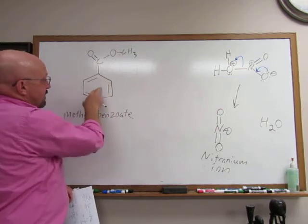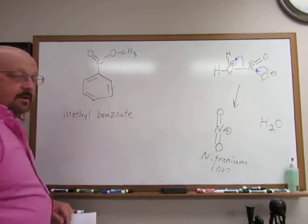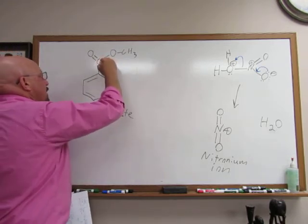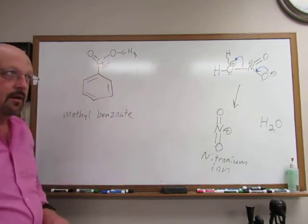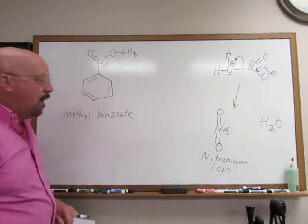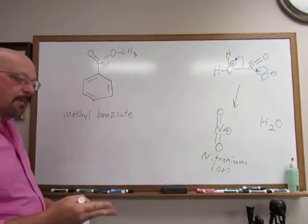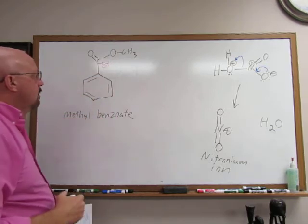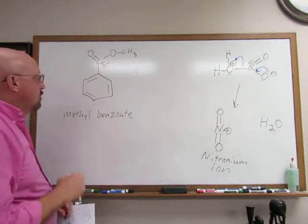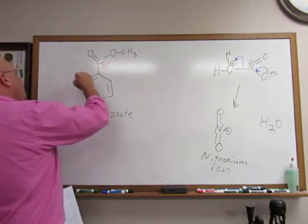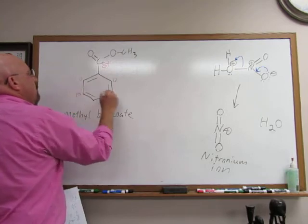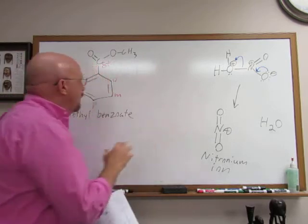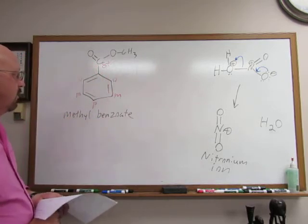You look at the atom directly attached to the ring — that is the one that's going to tell you the directing ability. This carbon directly attached to the aromatic ring has a partial positive charge on it. If there is a partial positive or a full positive on the atom directly attached to the ring, that's going to be a meta director. If the atom directly attached to the ring has a lone pair, in general that is an ortho/para director. So this is going to be a meta director. The ortho positions are here, here are the meta, and here is the para. So our nitronium ion is going to add to one of those meta positions.